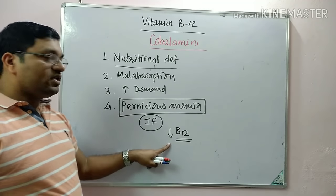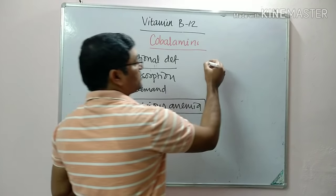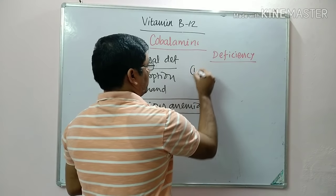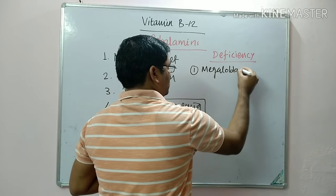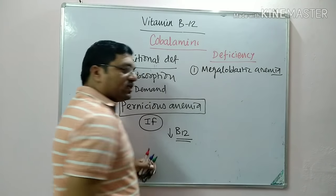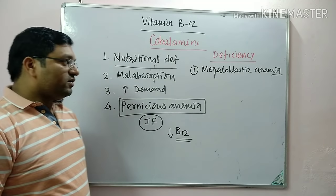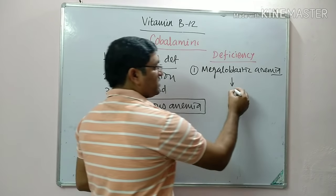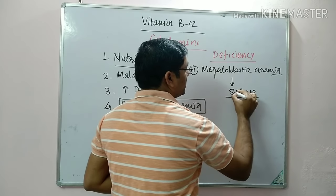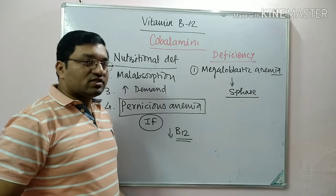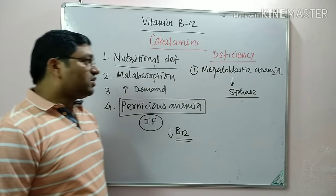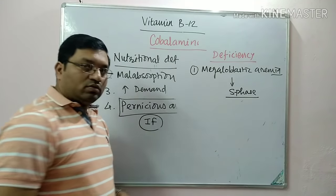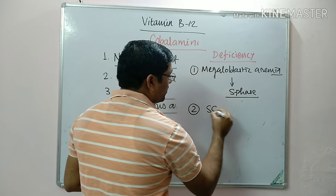The deficiency manifestations of Vitamin B12: First, megaloblastic anemia. This occurs because Vitamin B12 deficiency causes functional folate deficiency, leading to decreased DNA synthesis. Cells are arrested in the S phase and continue to grow without cell division, resulting in increased cytoplasm — producing macrocytic RBCs with immature red blood cells in circulation.